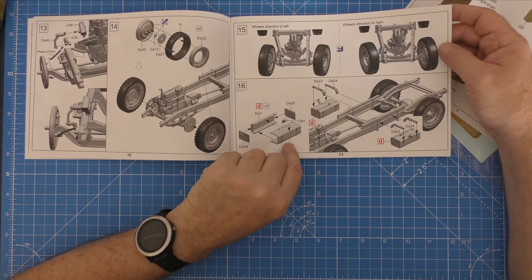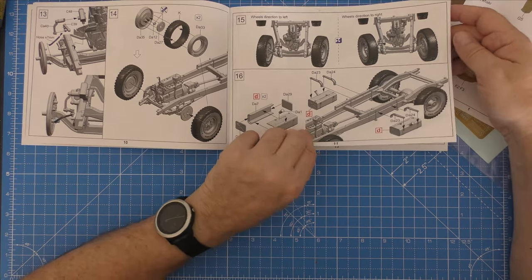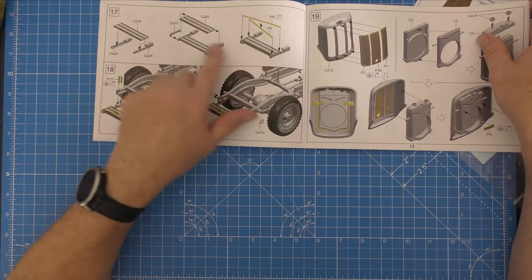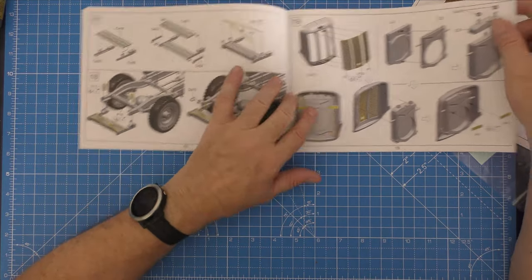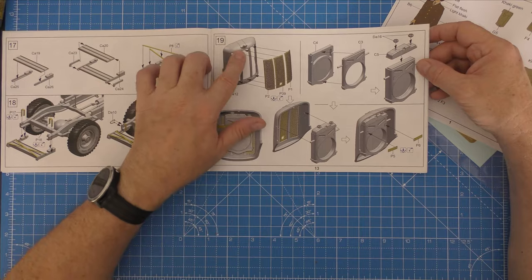Building up the fuel tank, installing the fuel tanks, one on each side. I think this is the rear step into the vehicle with some PE on it. Nice PE radiator.